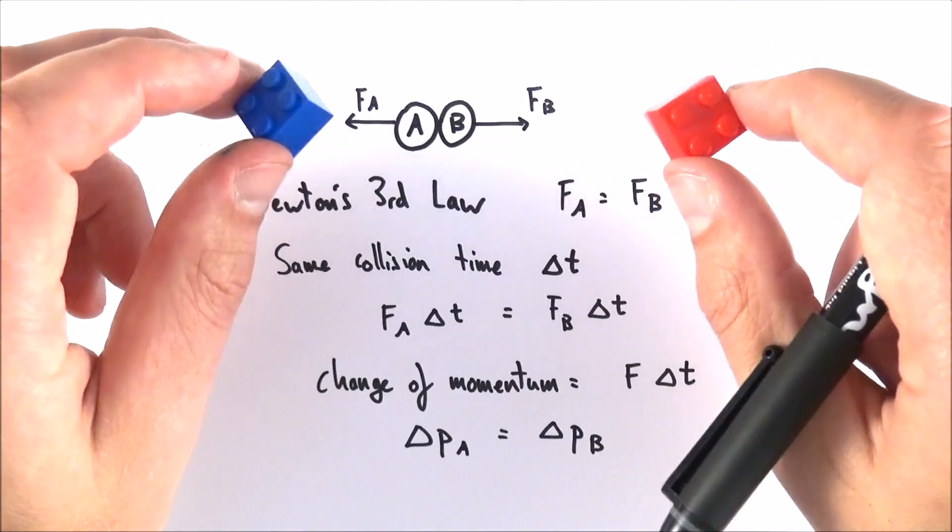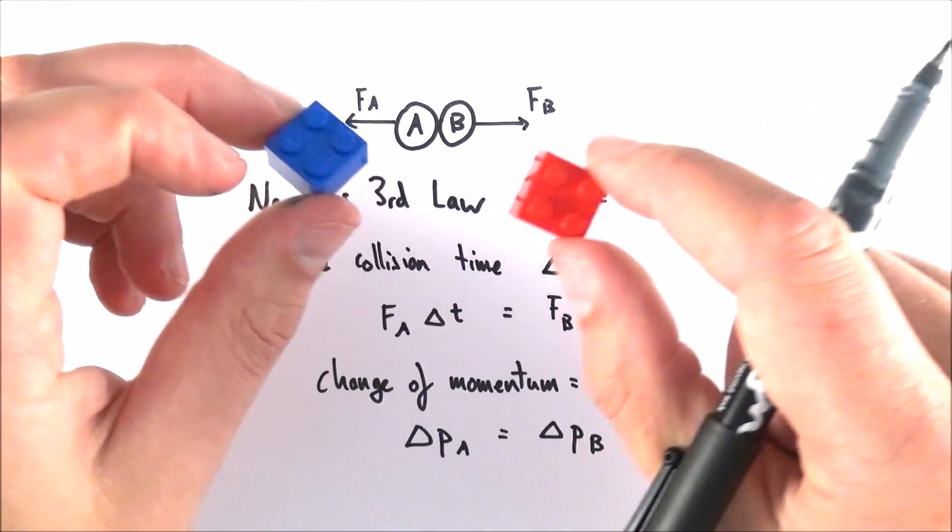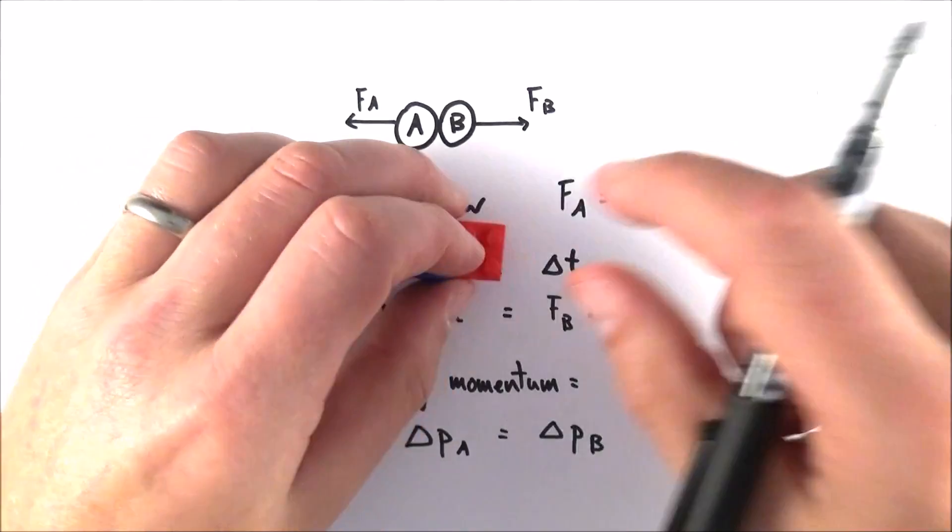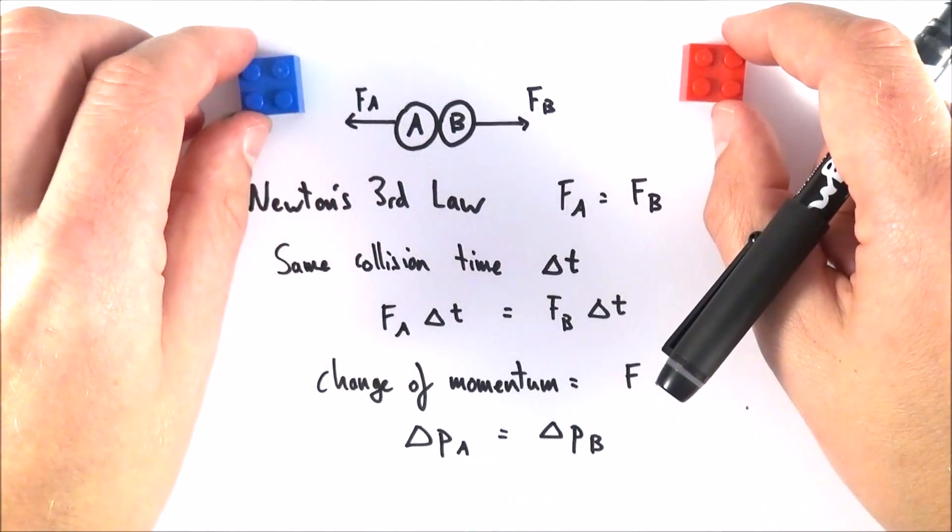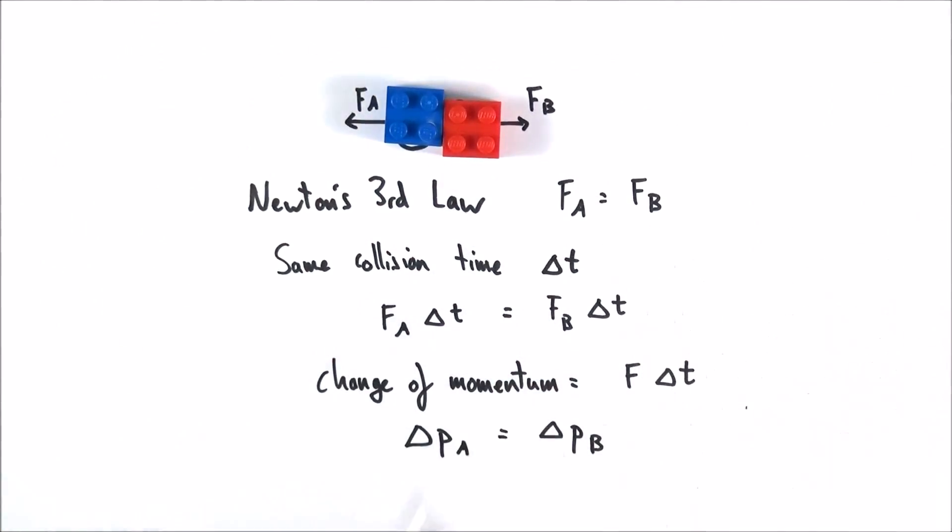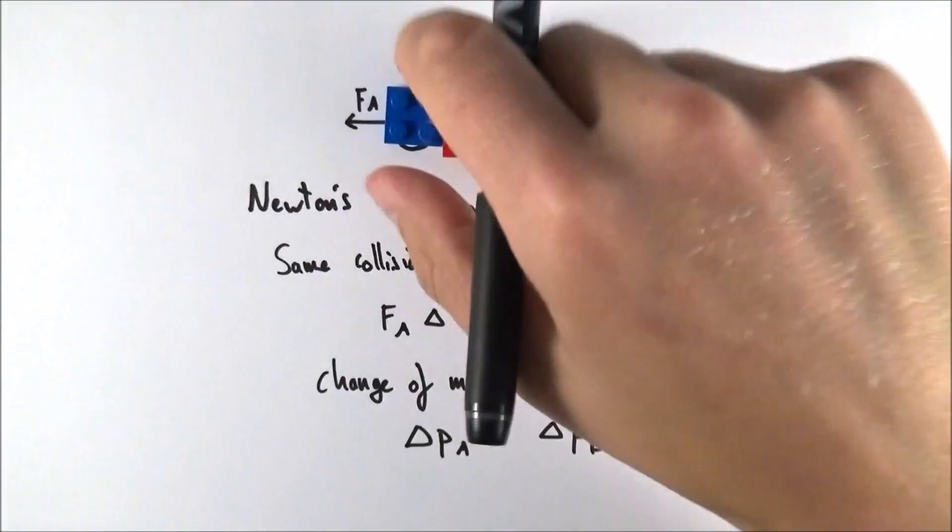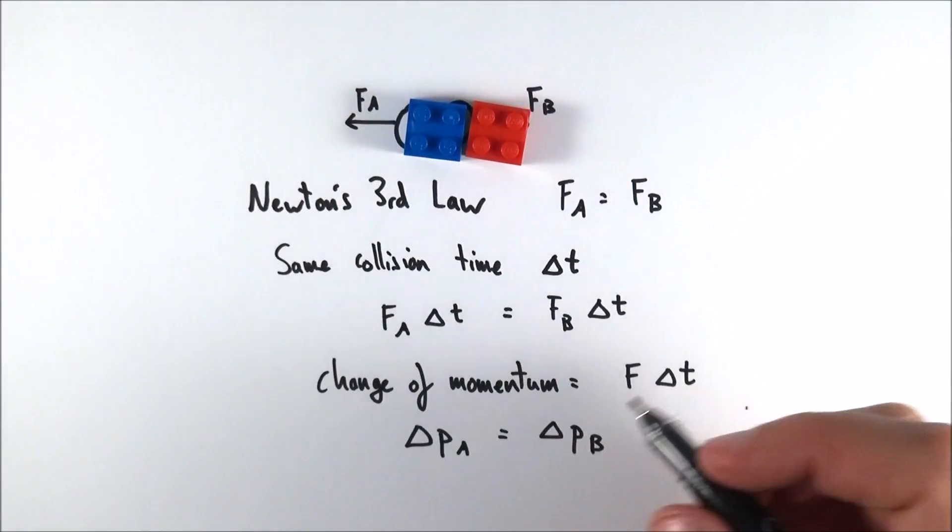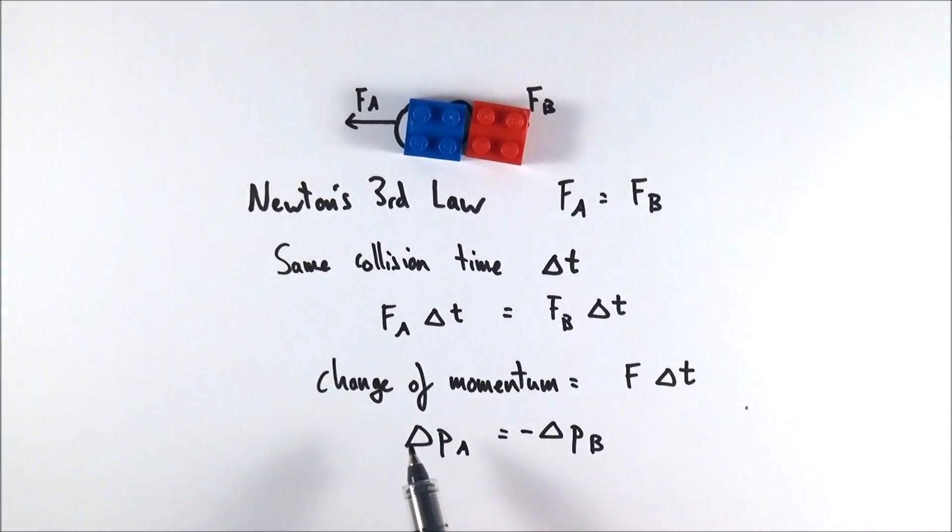Now so far we've looked at the magnitude of that change in momentum, but the important thing to note is that because these two things have opposite velocities when they move, that means they're going to have an opposite change in momentum. One's going to increase and one's going to decrease. And really we can say then that the change in momentum of A is going to be negative the value of the change in momentum of B, and that means that if we add these two momentums together, the total change in momentum is going to be zero.